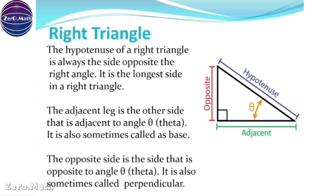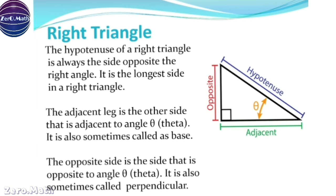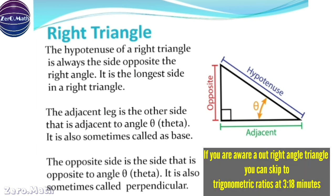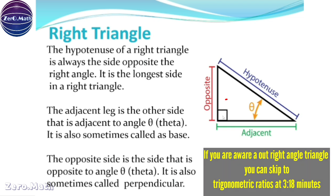Right-angle triangle. Before going to trigonometry, let's understand what is a right-angle triangle. A right-angle triangle means we talk about a triangle where one of the angles is 90 degrees.